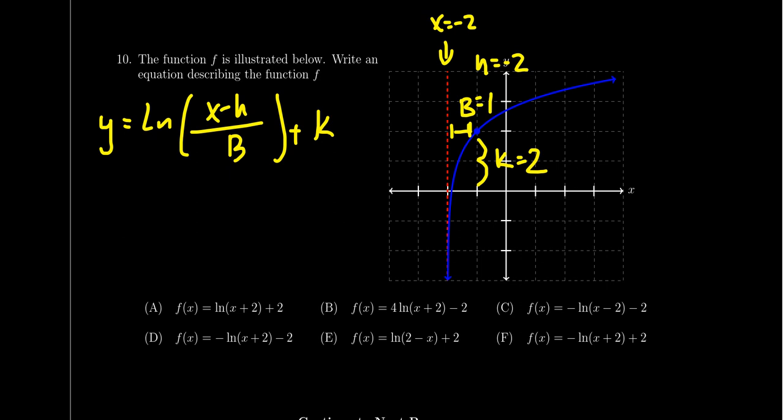We should also mention that the curvature goes to the right of the asymptote, so there's no reflection in there whatsoever.